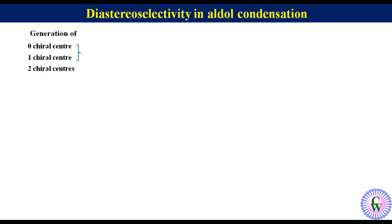In the first two cases there is no question of diastereoselectivity, but in the third case two diastereomers are formed in unequal proportion. Thus there is diastereoselectivity in the formation of one diastereomer over the other.